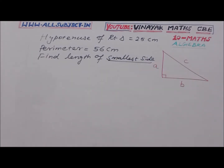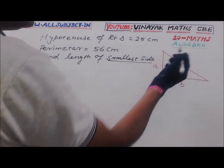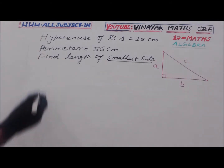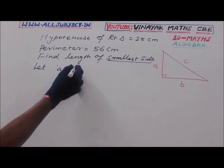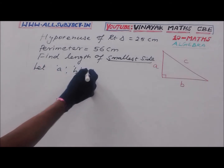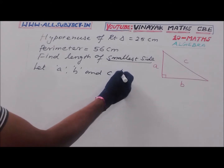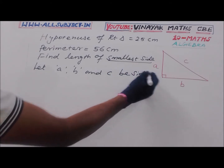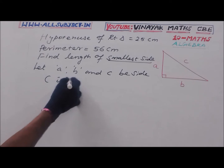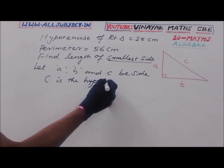Let A, B and C be the sides of the triangle, where C represents the hypotenuse.